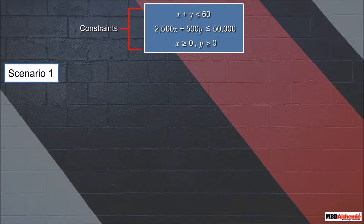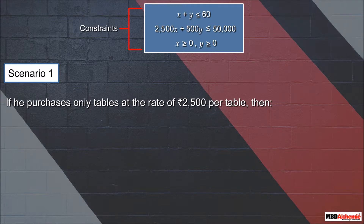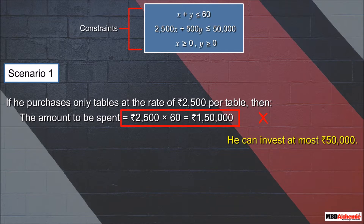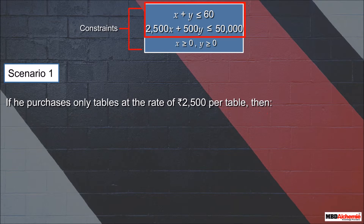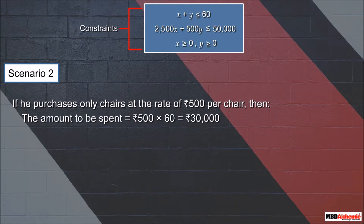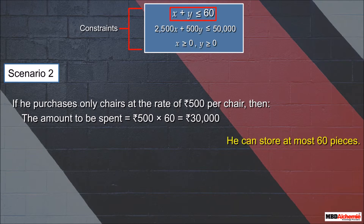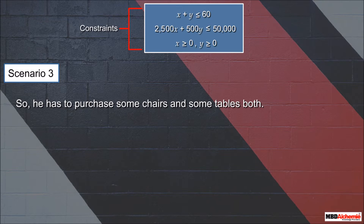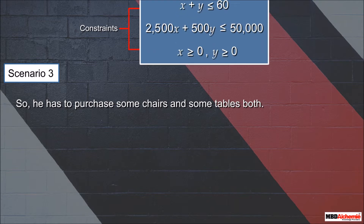Let's look at three scenarios. Scenario one: if he purchases only tables at 2,500 rupees each, he must spend 2,500 × 60 = 150,000 rupees — but since he can only invest 50,000 rupees, this scenario doesn't satisfy the constraints. Scenario two: if he purchases only chairs at 500 rupees each, he spends 500 × 60 = 30,000 rupees, which satisfies the storage condition but doesn't fulfill the investment amount condition. Scenario three: he must purchase some chairs and some tables, as this satisfies the given conditions.